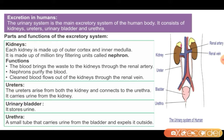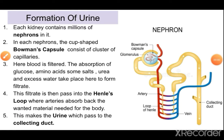Kidneys are bean-shaped structures, as you can see here. The kidneys are attached with the ureters. In the kidneys the urine is formed, and the urine is then passed to the ureters, which bring the urine to the bladder. In the bladder the urine is stored. The bladder is a muscular bag, and when the bladder gets full it sends a signal to the brain and removes the urine through the urethra.